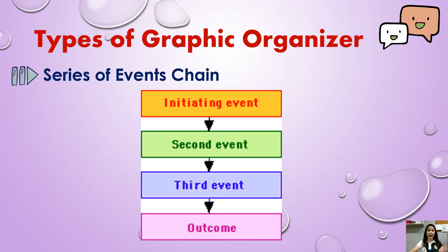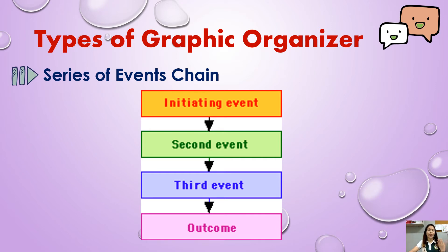Let's talk about the types of graphic organizer. We have some types and we will discuss some of them. Number one: series of events chain. You can see here a sample format. If you want to use this type of graphic organizer, the series of events chain can help students organize information according to various steps or series of events.